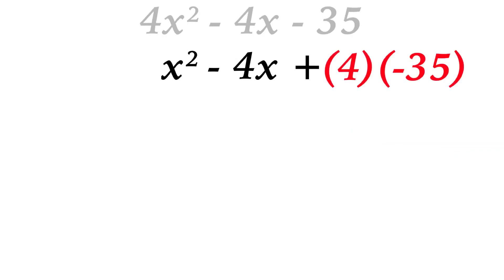We take that leading coefficient and the last term and multiply them together. So now we have x squared minus 4x minus 140 that I'm trying to factor. Notice I've converted this to a trinomial that has a leading coefficient of 1.